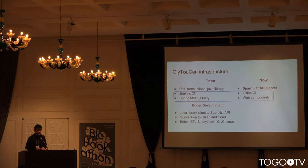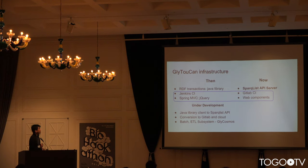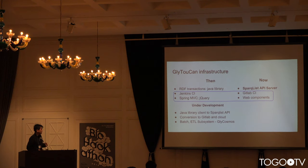What I'd like to talk about is what I learned through doing this project and the changes we're going to be implementing, to see if there are any points of collaboration with anybody during this hackathon. One of the main points — on the left-hand side — is what we first started implementing for the project: using a Java library for RDF transactions, Jenkins for CI, and the Spring MVC Web Framework.